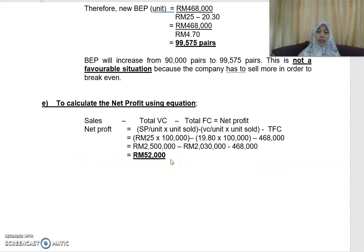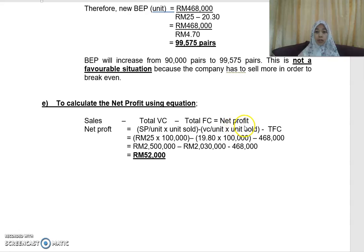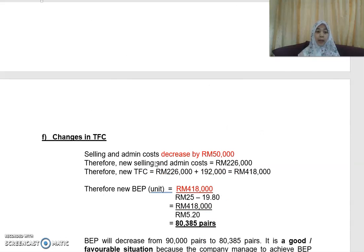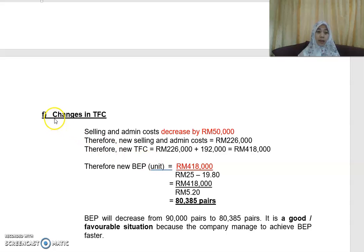Part (e) requires calculating net profit. Using the equation: total sales minus total variable cost minus total fixed cost equals net profit. Substituting all figures, if 100,000 pairs are sold, the net profit is RM52,000.